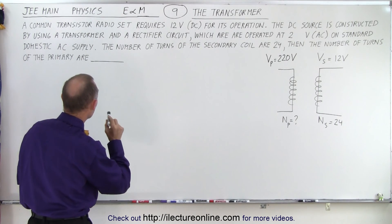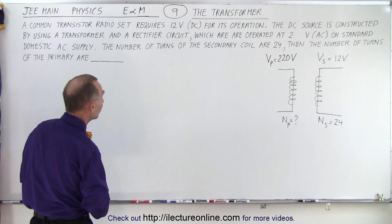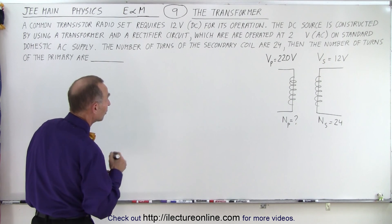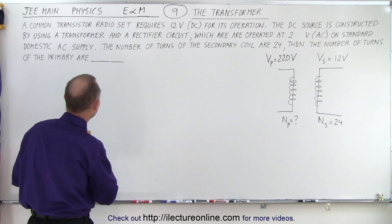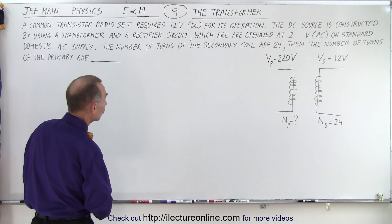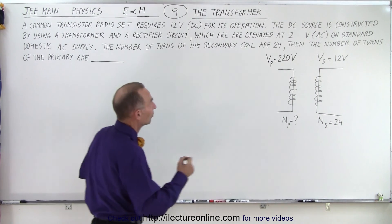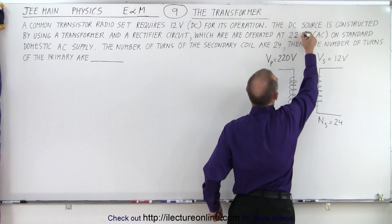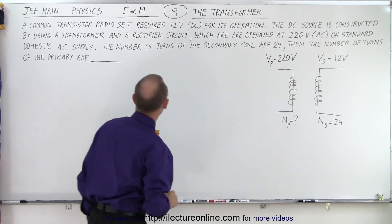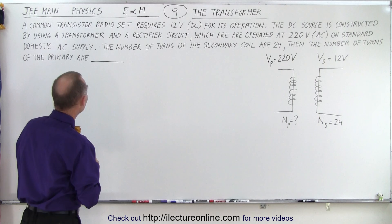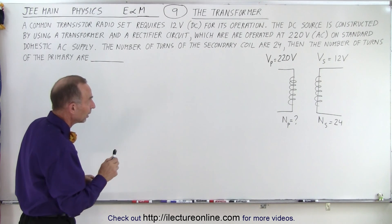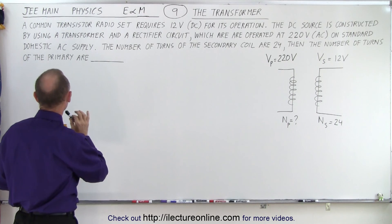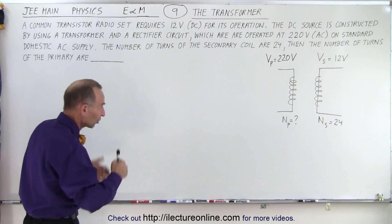A common transistor radio set requires 12 volt DC for its operation. The DC source is constructed by using a transformer and a rectifier circuit which are operated at 220 volts AC on standard domestic AC supply. The number of turns of the secondary coil are 24, then the number of turns of the primary are question mark.